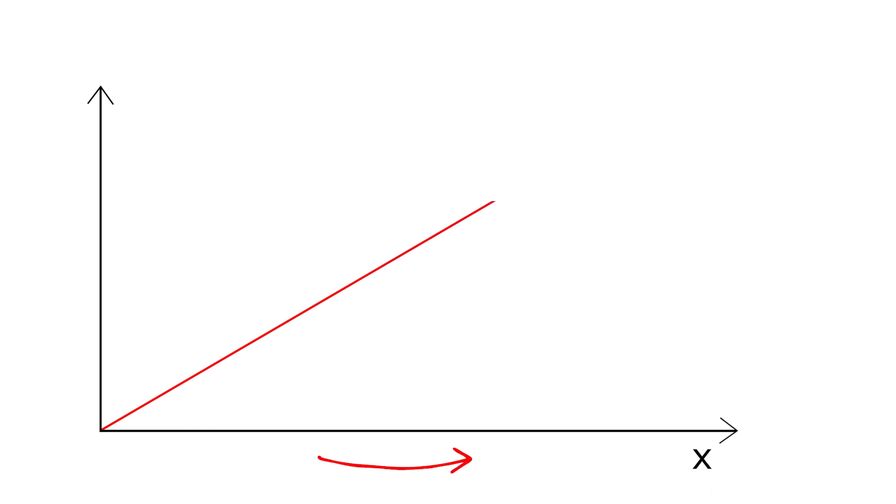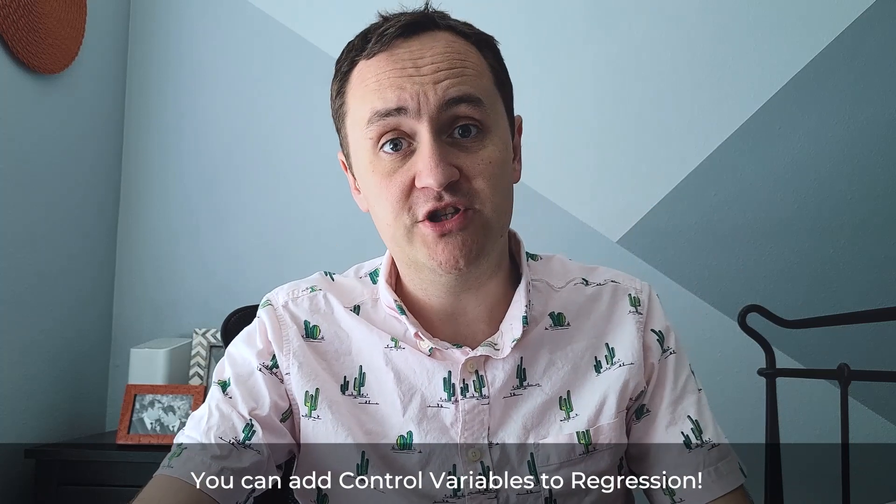We are going to describe this relationship using a shape — maybe a straight line — so that as we move along the x-axis we expect to be moving a certain amount along the y-axis as well. Regression is a line-fitting procedure: you give it the shape you want to fit and it chooses the best version of that shape. You can add control variables to regression, which is one reason why it's so popular. That flexibility allows you to isolate just the part of the x-y relationship that is not explained by the control variable.